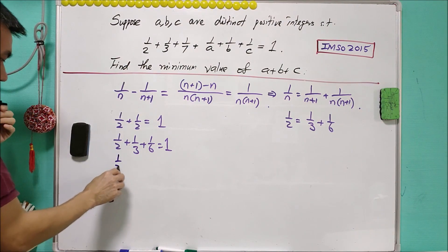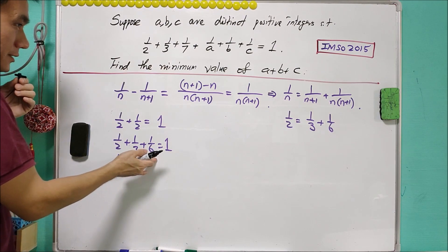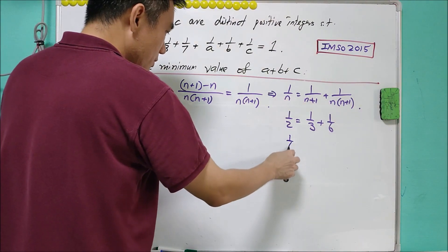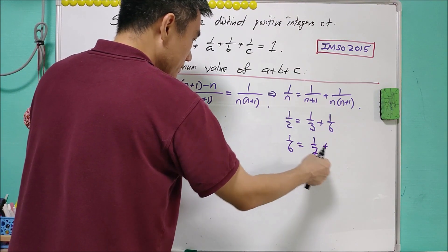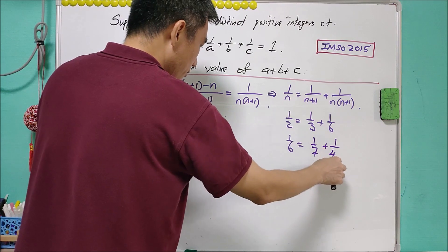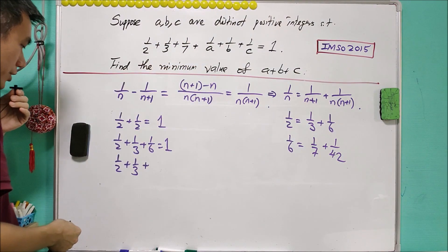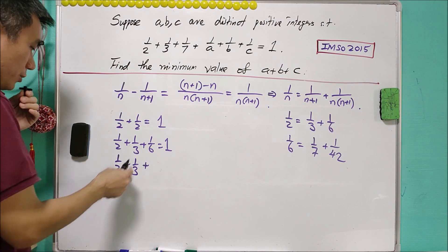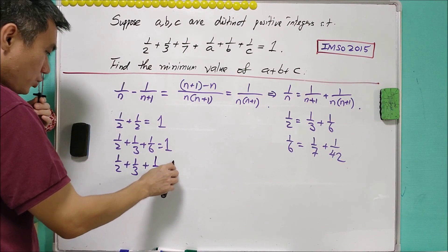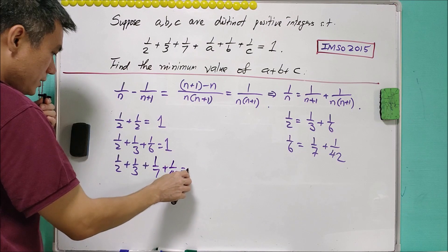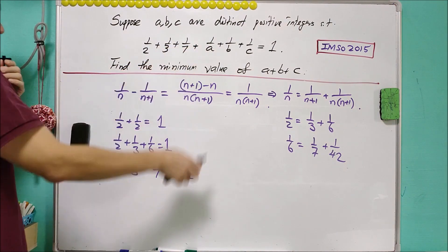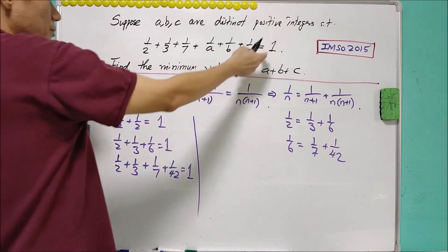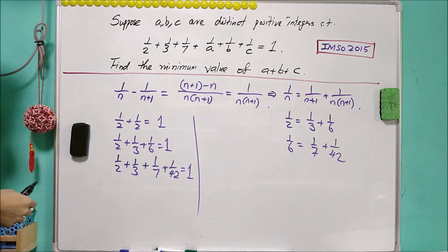Likewise, we can replace 1 over 6 by saying that N is equal to 6. 1 over 6 will equal to 1 over 7 plus 1 over 42. So we obtain another equation that is 1 over 2 plus 1 over 3 plus 1 over 7 plus 1 over 42 is equals to 1. And compared to the equation that we have, then we know that actually the sum of 1 over A, 1 over B, 1 over C is equals to 1 over 42.